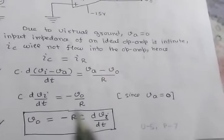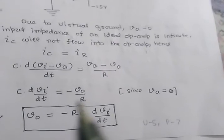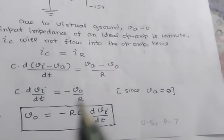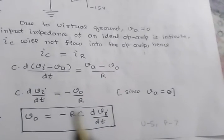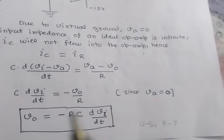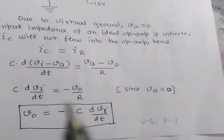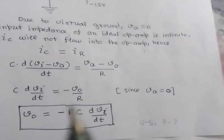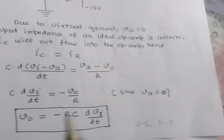If we apply a ramp signal at the input of the differentiator, then the output will be a DC signal.